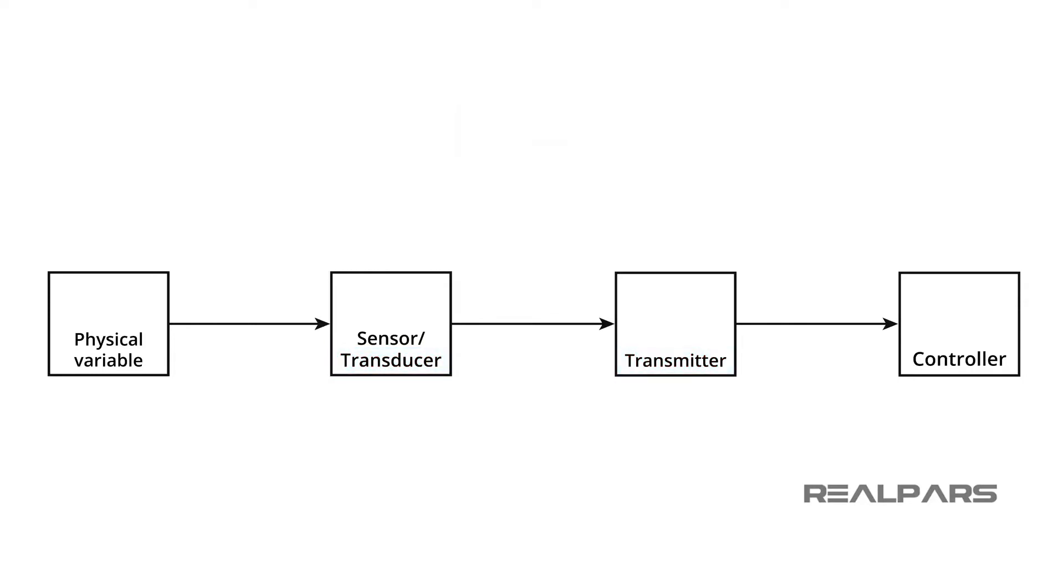As mentioned earlier, the electrical transmitter output signal is usually a range of voltage, 1 to 5 volts, or current, 4 to 20 milliamps. In process control, it is understood that the transmitter output range represents the 0 to 100% of the sensed physical variable. For example, the transmitter would produce an output current range of 4 to 20 milliamps for a measured temperature range of 0 to 150 degrees Fahrenheit.